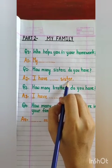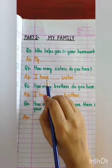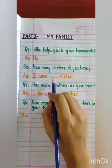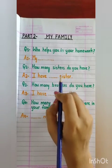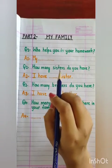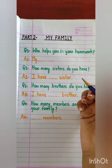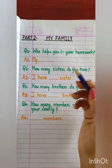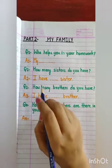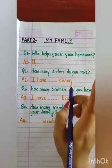Suppose aap ki two sisters hain to aap bolenge 'I have two sisters'. Usi tarah se three sisters hain to 'I have three sisters', four hain to 'I have four sisters'. Lekin kisi ki sisters nahin hoti, brothers hote hain — to aap bolenge 'I have no sister'.